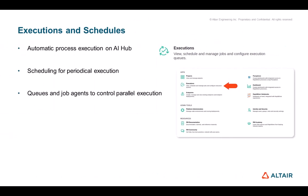Under Executions and Schedules, you can see all the modules for process execution on the AI Hub. You might want to execute processes automatically with the scheduler. You can schedule processes for periodic execution — for example, every day, hour, or weekend. Queues and job agents are available to control the parallel execution of jobs. If you are interested in this topic, there is a special video about job control.